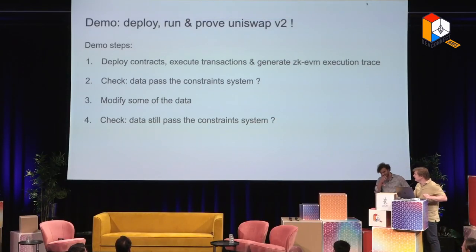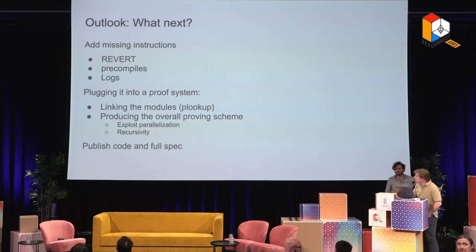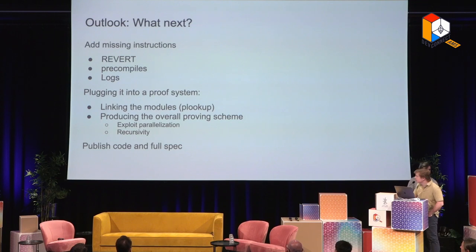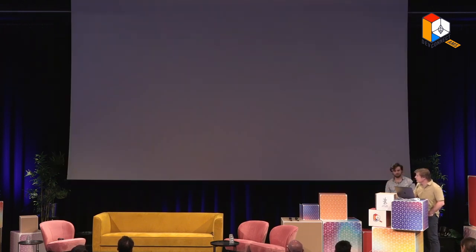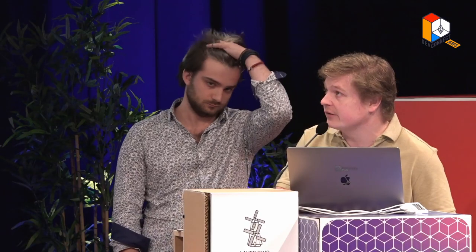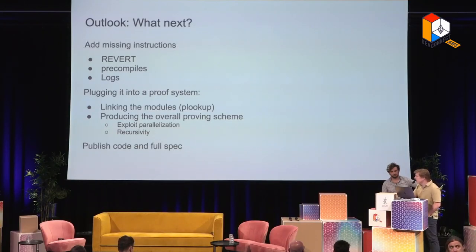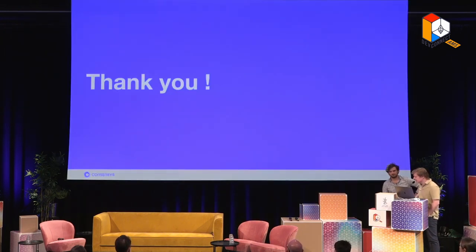What is still missing and what is coming over the next few months: we are still missing a few instructions which we will be adding. For instance, the revert instruction is very complex — we have it arithmetized to some extent but haven't implemented it currently. We're not currently supporting pre-compiles and logs, but all of this will be added over the next few months. We will also be publishing our code and full spec around the same time. The next big step is to plug all of this into a proving system — we have ideas on how to do it, but it's still a bit in flux currently.